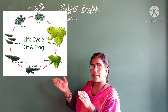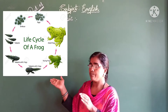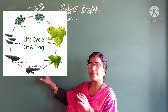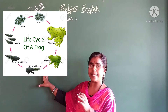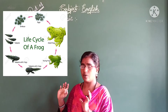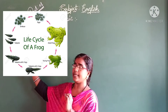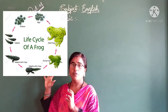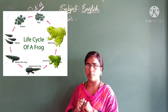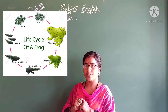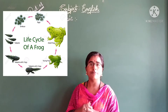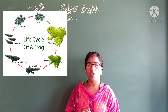The tail is going to disappear slowly. When it becomes the frog, the tail is totally disappeared. Then the four limbs - forelimbs and hind limbs of the frog - will be formed. This is what we call the life cycle of the frog.